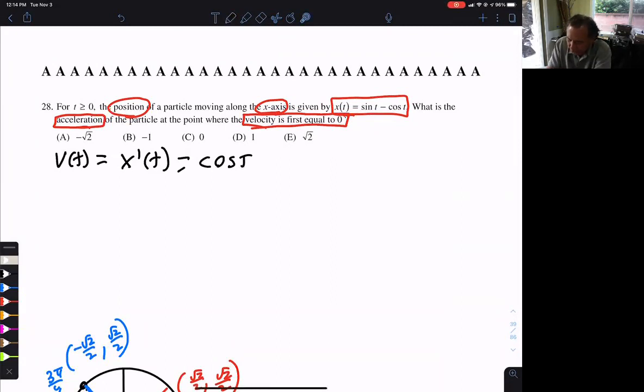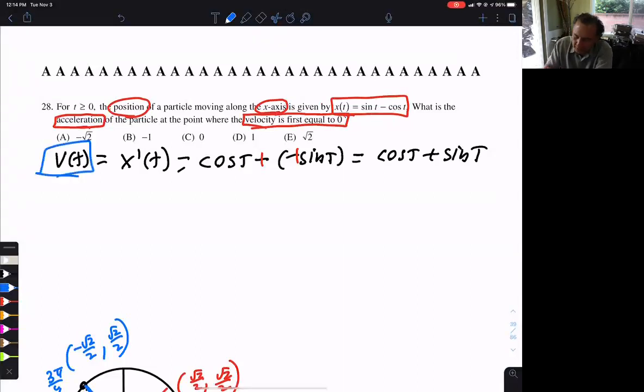And then we say, what's the derivative of cosine? That's going to be minus sine. But the two negatives make a plus. So we have our answer, cosine t plus sine t. We have now found the velocity.